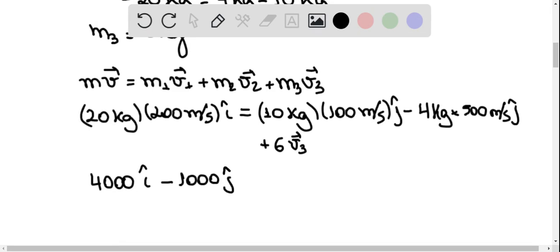So I have 4000 i, minus 1000 j, plus 2000 i, there should be i, I wrote j here, I'm sorry for that.